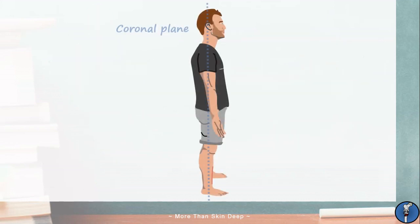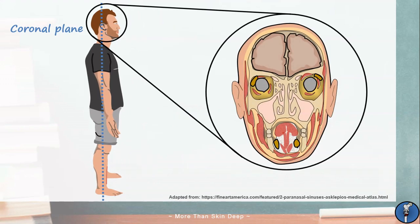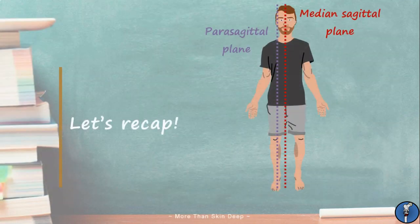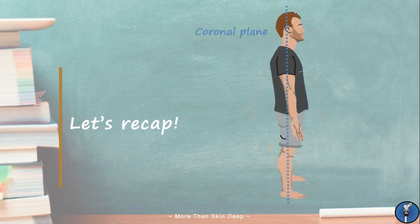Finally, we have the coronal plane, which divides the body into anterior and posterior parts. A coronal plane of the head produces this rather creepy view of the brain, eyeballs, nasal cavity, mouth and tongue. Let's recap the planes: the sagittal plane splits the body into left and right parts, the transverse plane splits it into superior and inferior parts, and the coronal plane splits it into anterior and posterior parts.